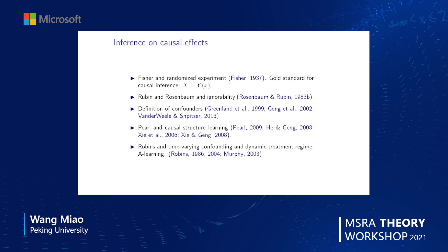These works are paralleled by statistical contributions from statisticians. Fisher and Neyman studied the randomized experiment, which is the gold standard for causal inference, particularly in medical and clinical research. Rubin and Rosenbaum proposed ignorability, which is the foundation for most observational studies. Greenland, Gung, and Wenderville studied the definition of confounders. Pearl established the framework for causal structure learning and won the Turing Prize in 2011. Robinson and Murphy promoted research in time-varying confounding and dynamic treatment regimes, proposing A-learning, which is quite close to Q-learning and reinforcement learning.